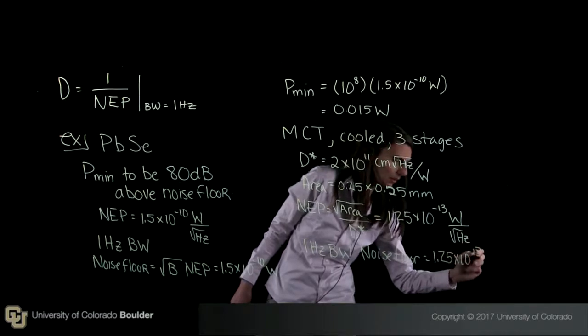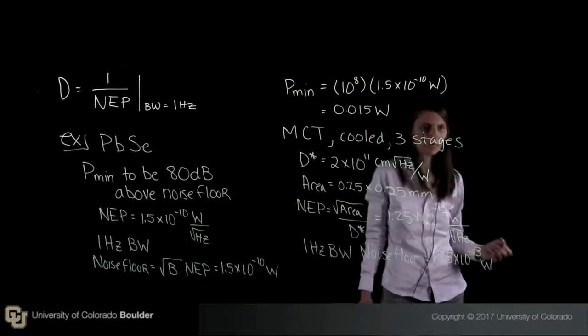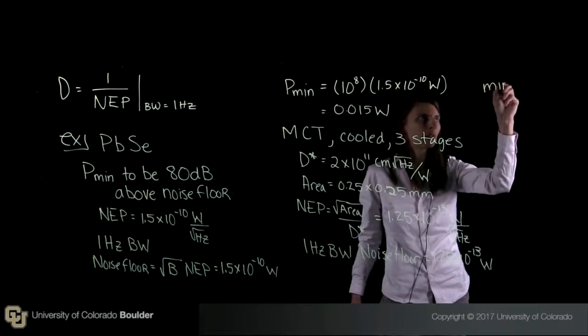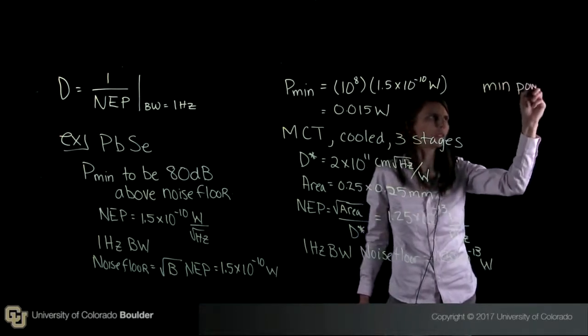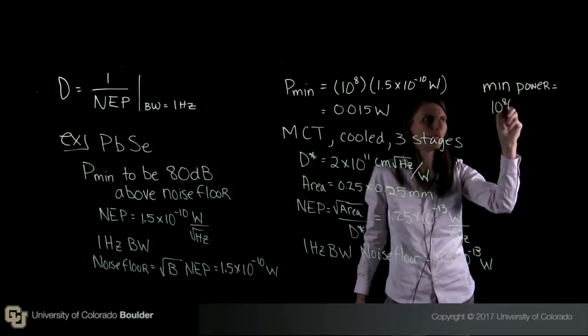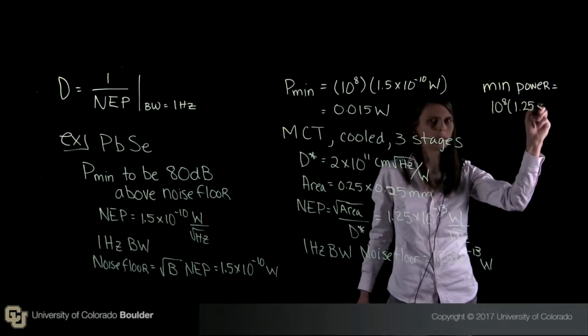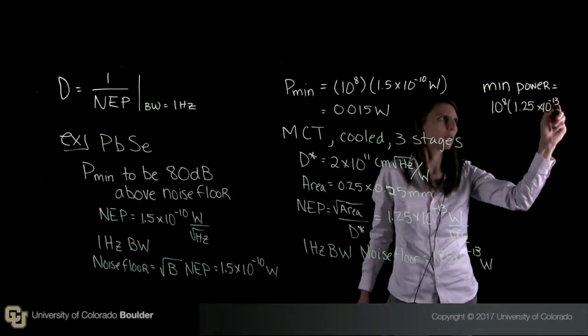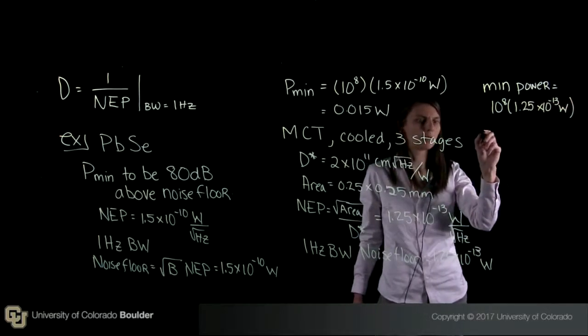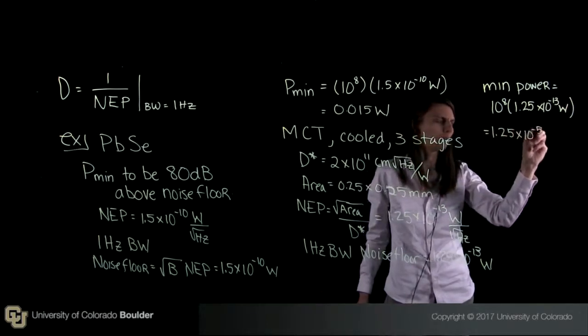So you can see that this detector is a lot better than our lead selenide detector. So now we can think about the minimum power that we need. The minimum power that we need is essentially just going to be equal to 10 to the 8 times 1.25 times 10 to the minus 13 watts. And so this is equal to 1.25 times 10 to the minus 5 watts.